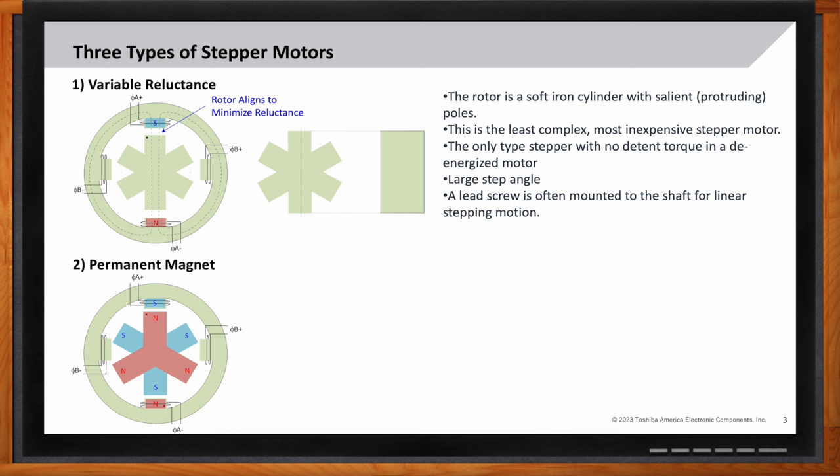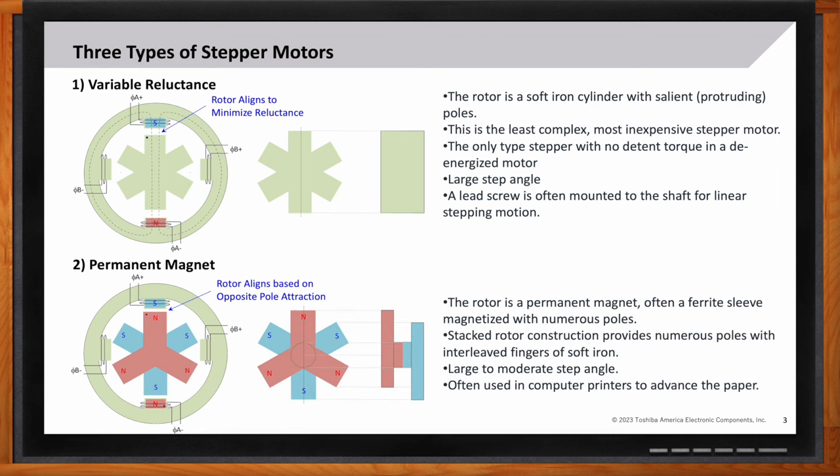The second type is the permanent magnet. Here, the rotor is a permanent magnet that's typically made up of either a ferrite sleeve or discs, a north pole disc and a south pole disc. And then these are interleaved so that you get alternating north-south poles. If it's just a permanent magnet, they have large to moderate step angle. They're often used in computer printer applications to advance the paper. The third type is a hybrid, which combines the benefits of both of these.